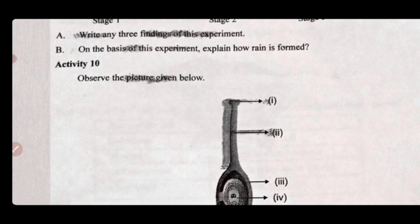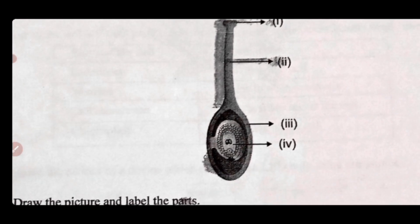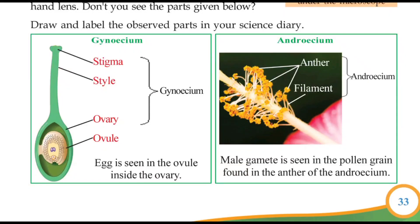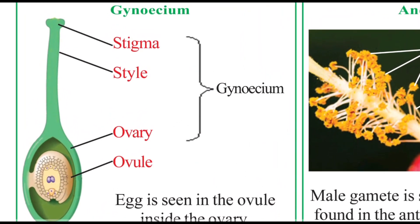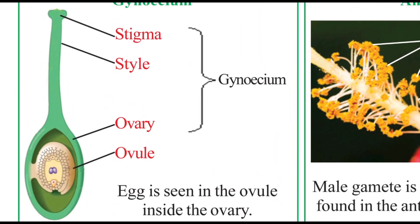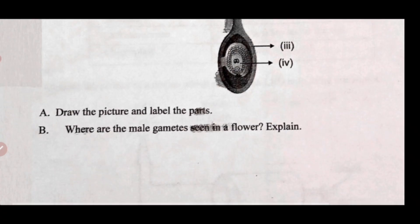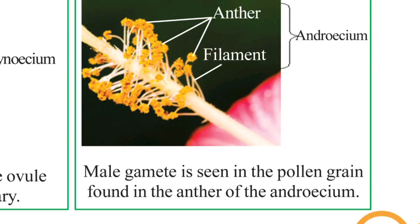Activity Ten: observe the picture of the flower given below and label the parts. Page number 44 — the answer shows the Gynoecium with stigma, style, and ovary. In the picture, the egg is seen in the ovary. The next question: where are the male gametes seen in the flower? The male gamete is seen in the pollen grain found in the anther of the Androecium.